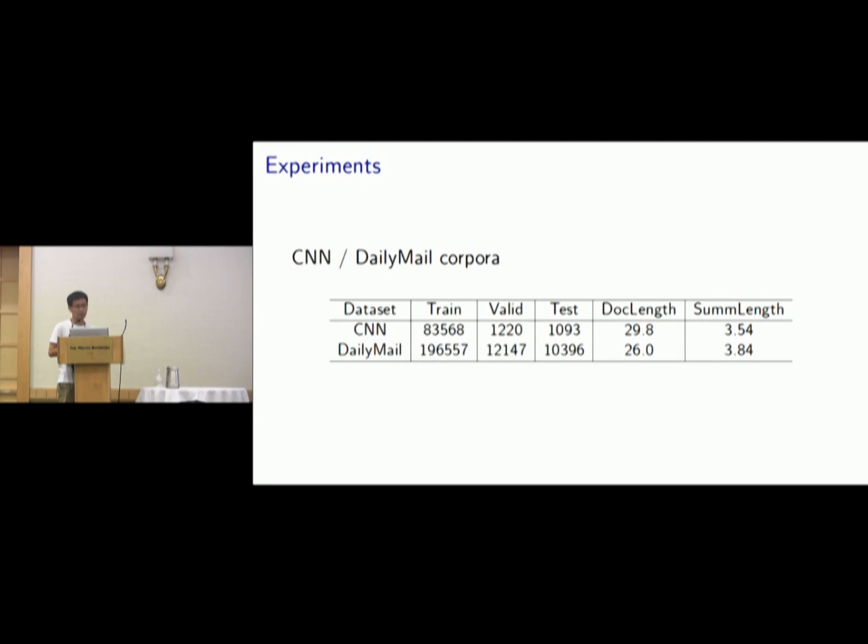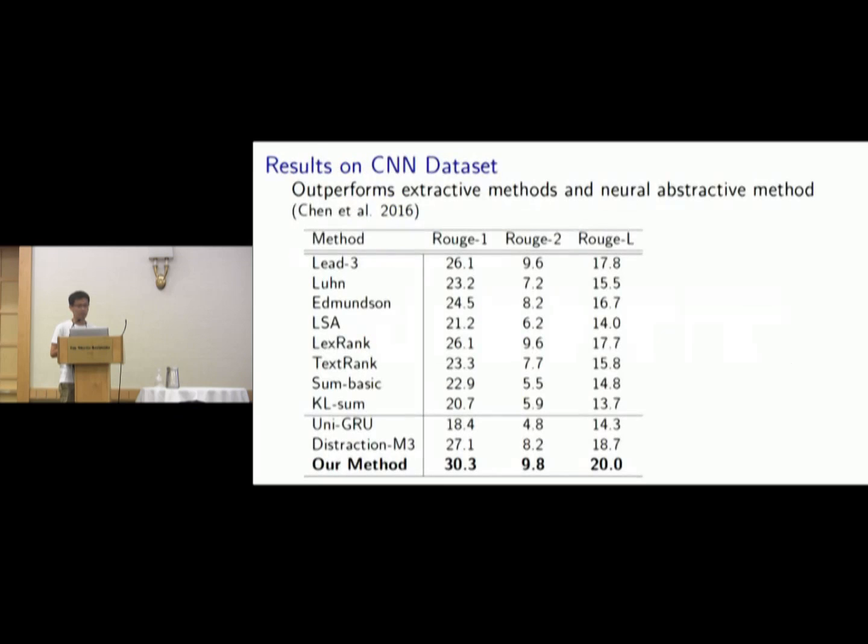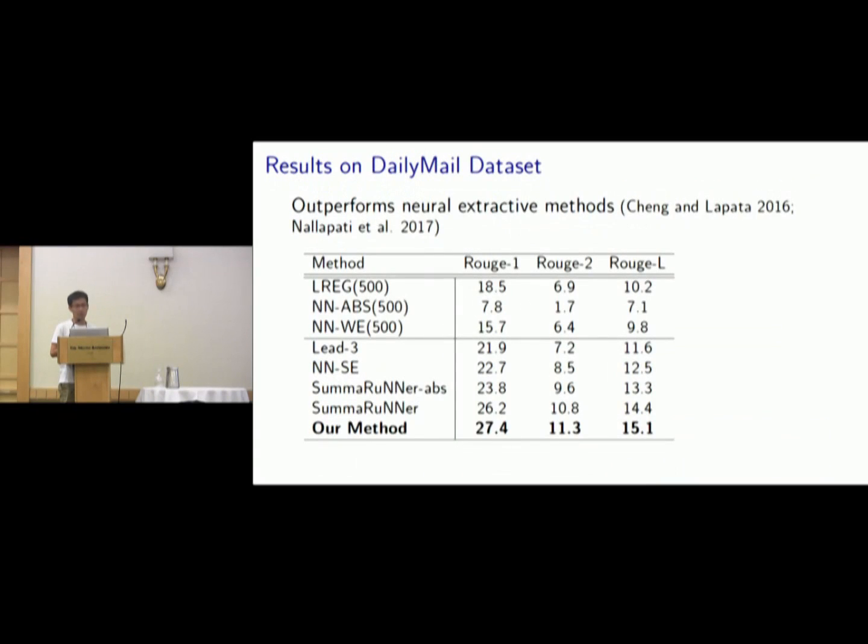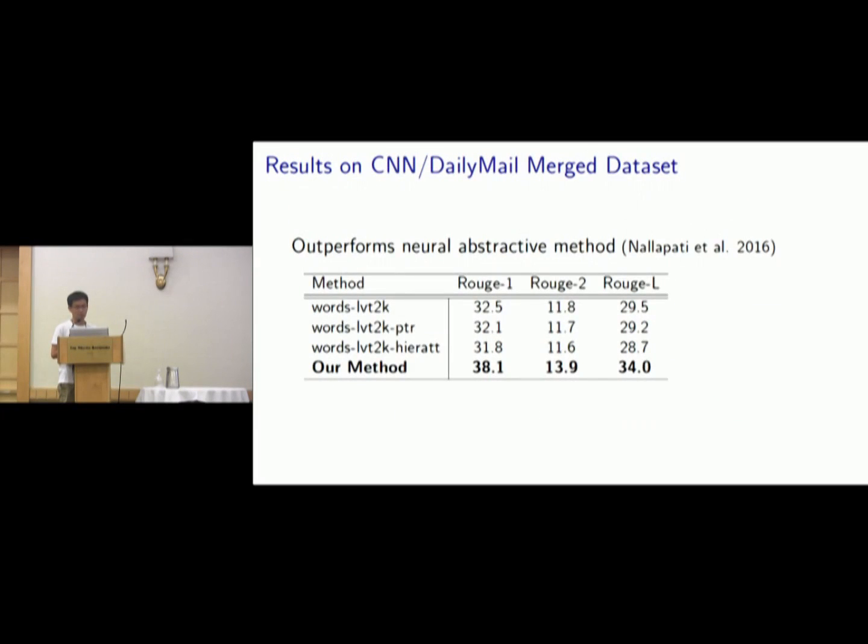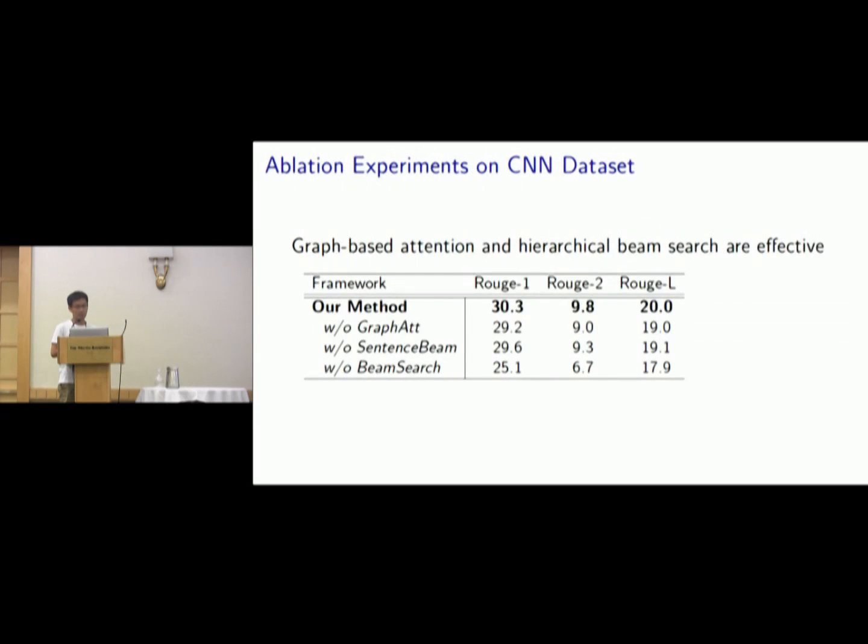We conduct experiments on CNN and the Daily Mail corpora. The experimental results show that our method is able to outperform various extractive baselines including Lead, and neural abstractive methods. And also outperform neural abstractive baselines. Ablation examples also verify that the graph-based attention mechanism and the hierarchical beam search are effective.